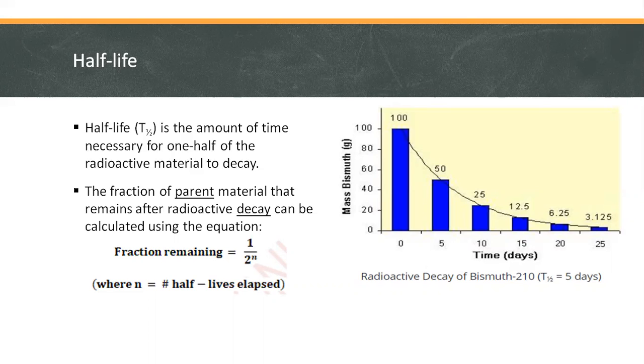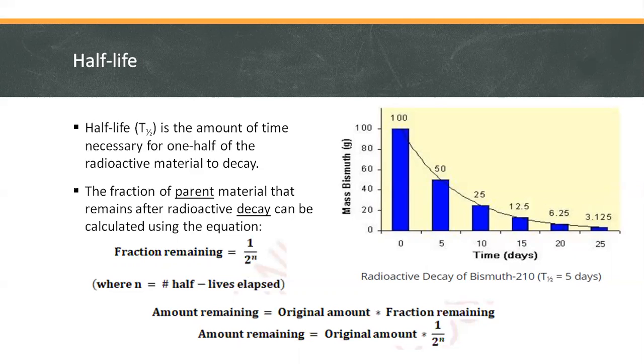The amount of radioactive material that remains after a given number of half-lives is therefore: amount remaining equals original amount times the fraction remaining.